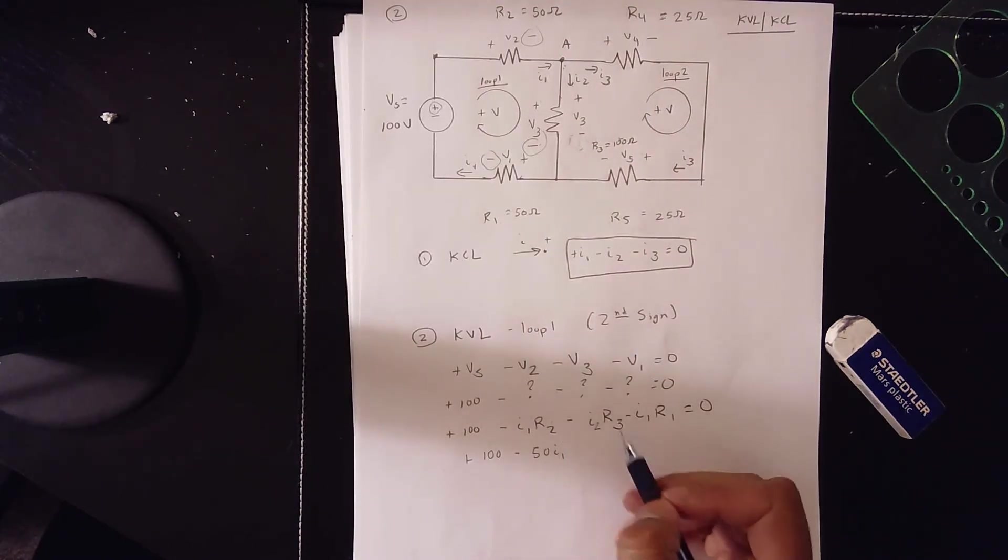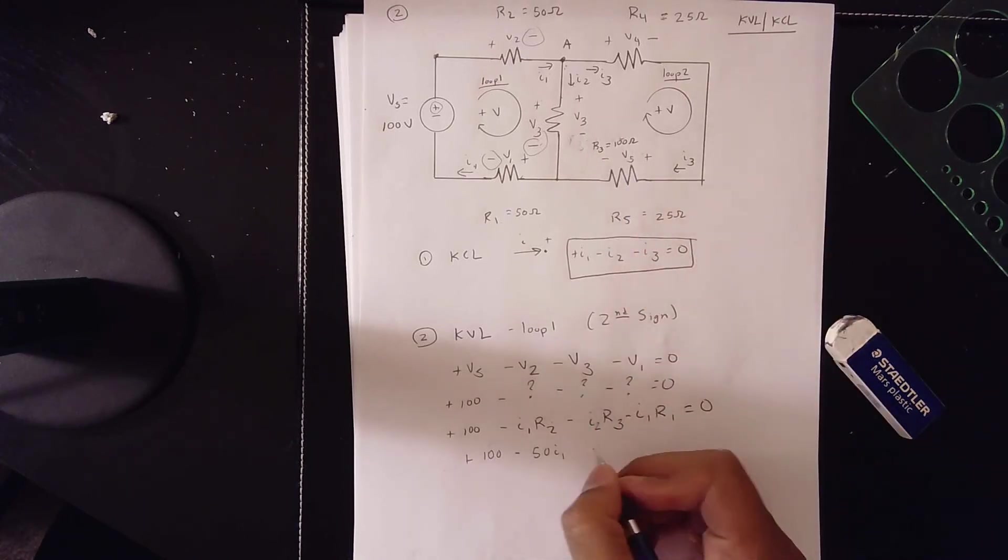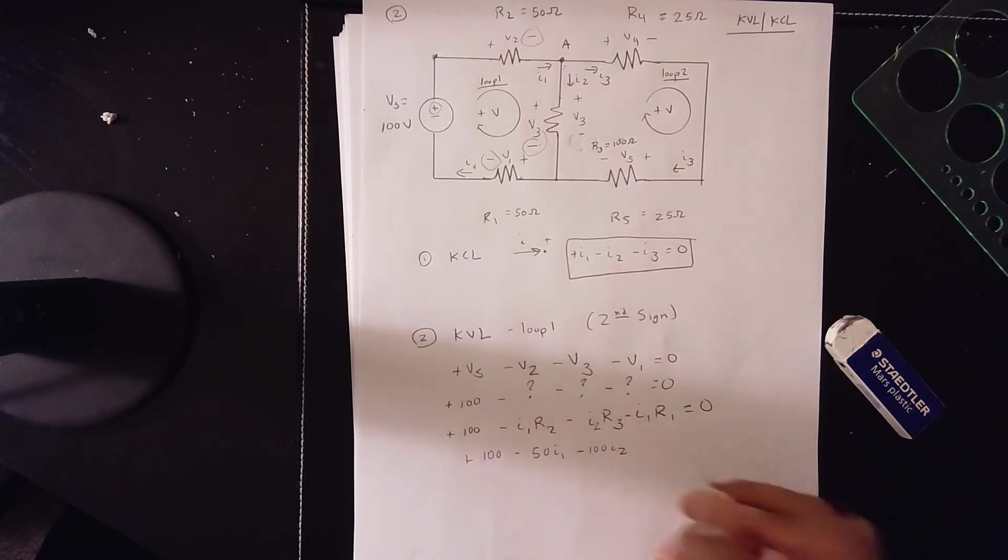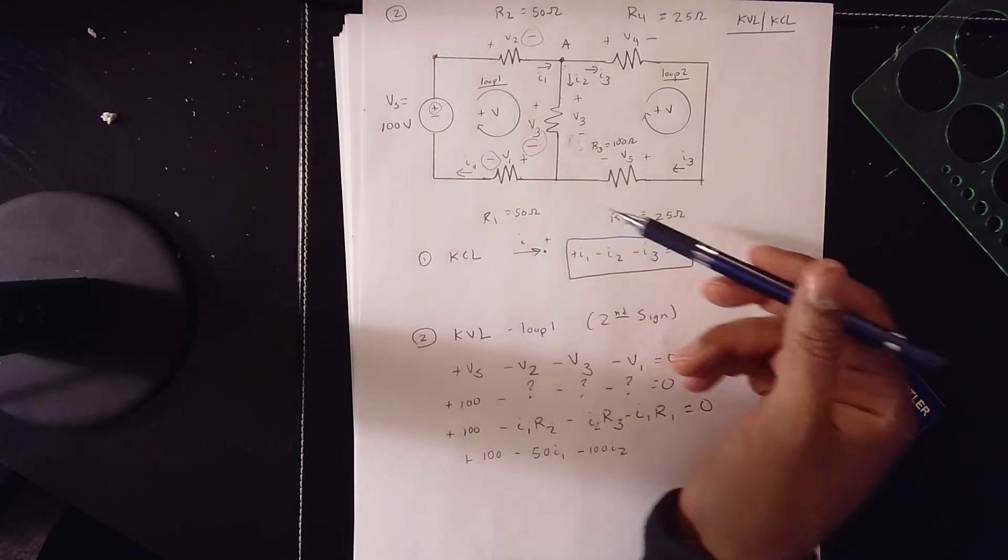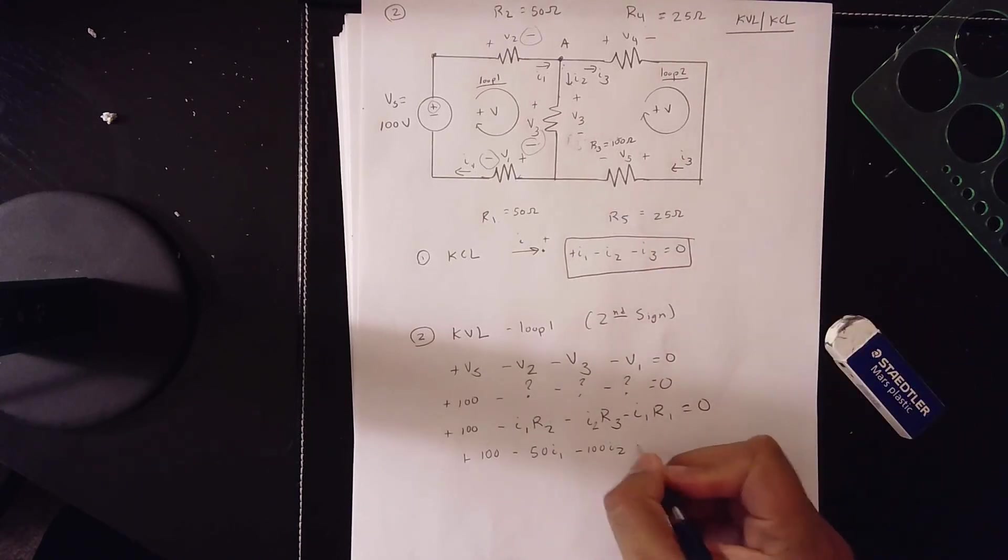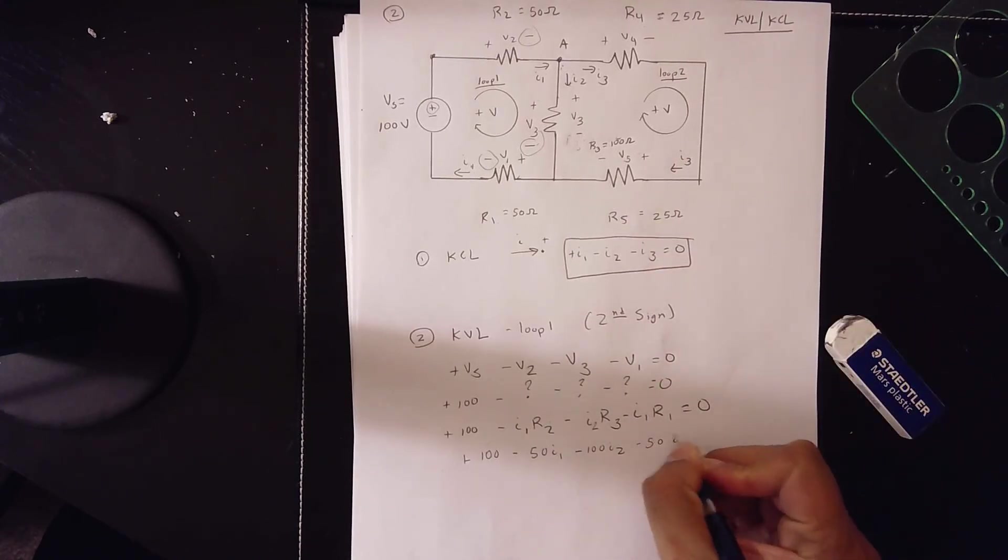And then you have an R3 value of 100. 100 I2. And you have a R1 value of 50 minus 50 I1 is equal to 0.